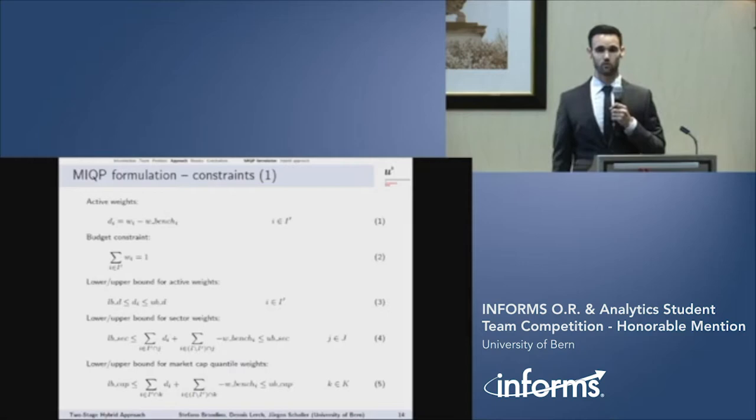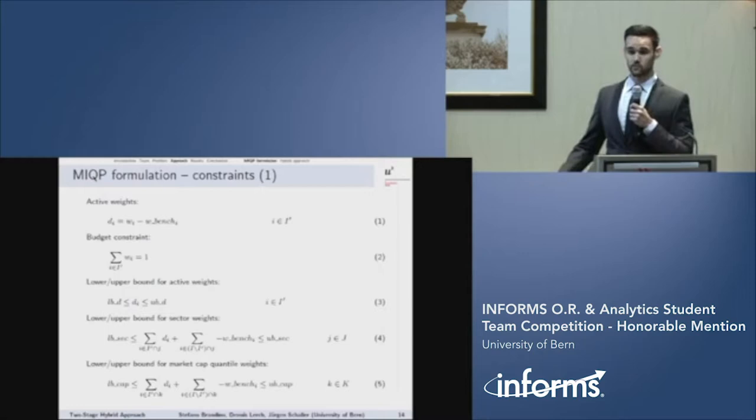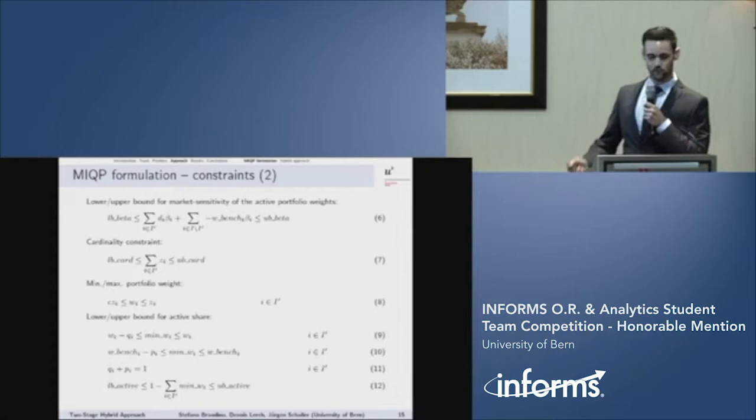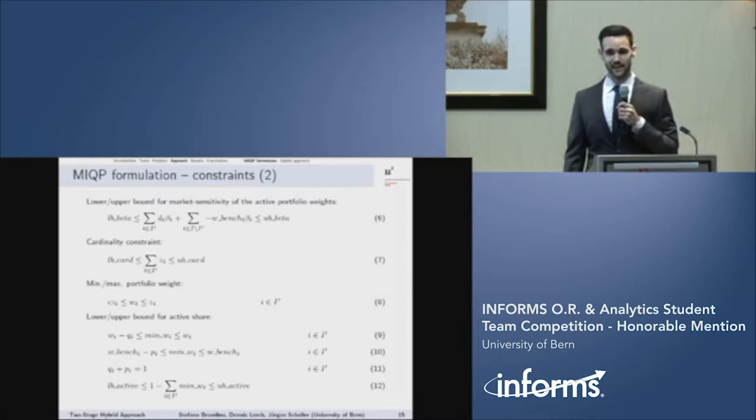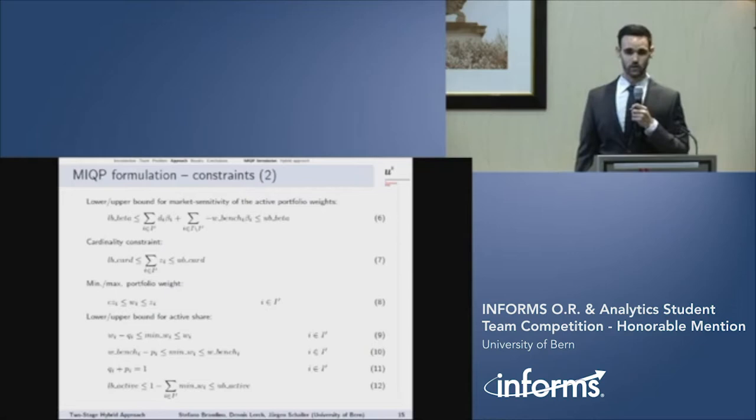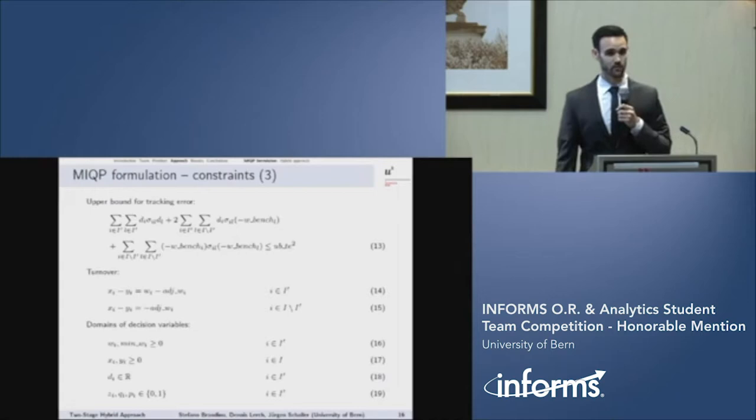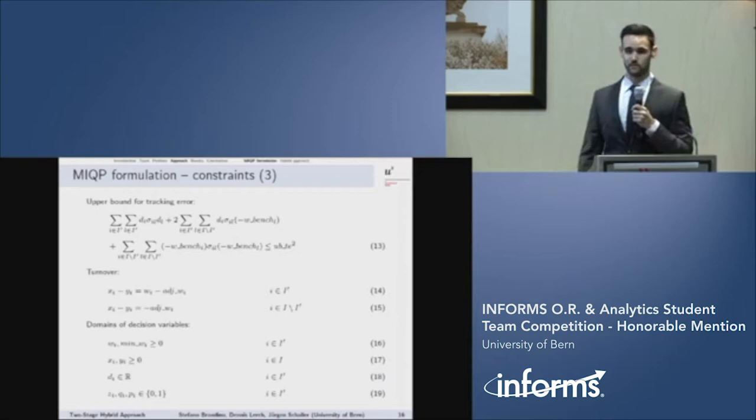Let me proceed to the constraints. We mostly used the formulation from the problem statement, so I won't go through everything. I will just point out the differences we implemented. Also, by the constraints, there is the change by using a subset. So like in constraint four, we used minus the benchmark weight for all stocks which are not in the subset. Further, we have constraint eight, where the binary decision variable is activated and it is one if a stock is included in the portfolio and zero if not. Further, constraint eight also sets a minimum and maximum portfolio weight. Constraint 13 defines the upper bound for the tracking error. However, there is also a lower bound for the tracking error, which we could not incorporate in our MIQP because the problem will be non-convex and therefore not solvable by a solver. I will address this in the next section.